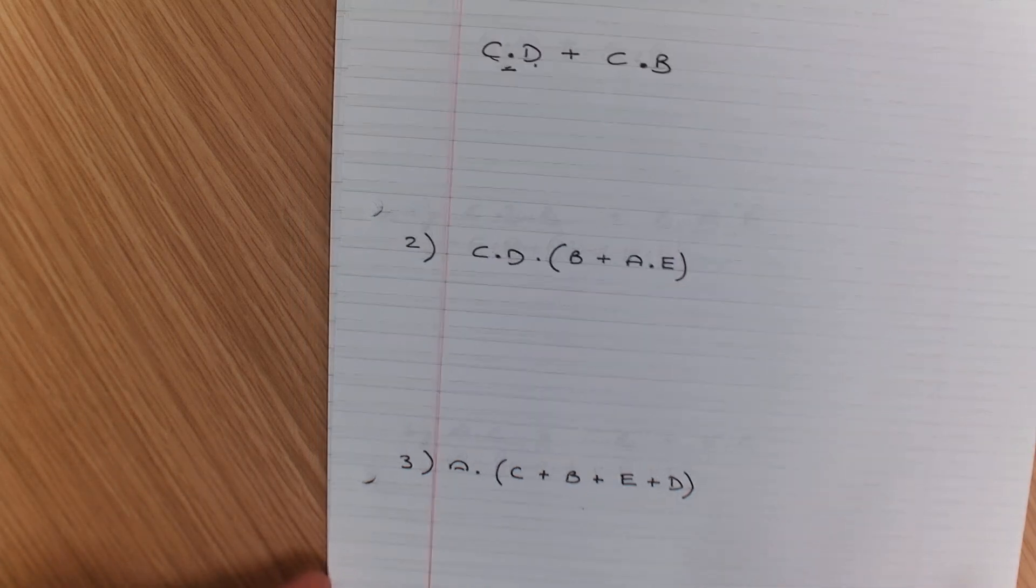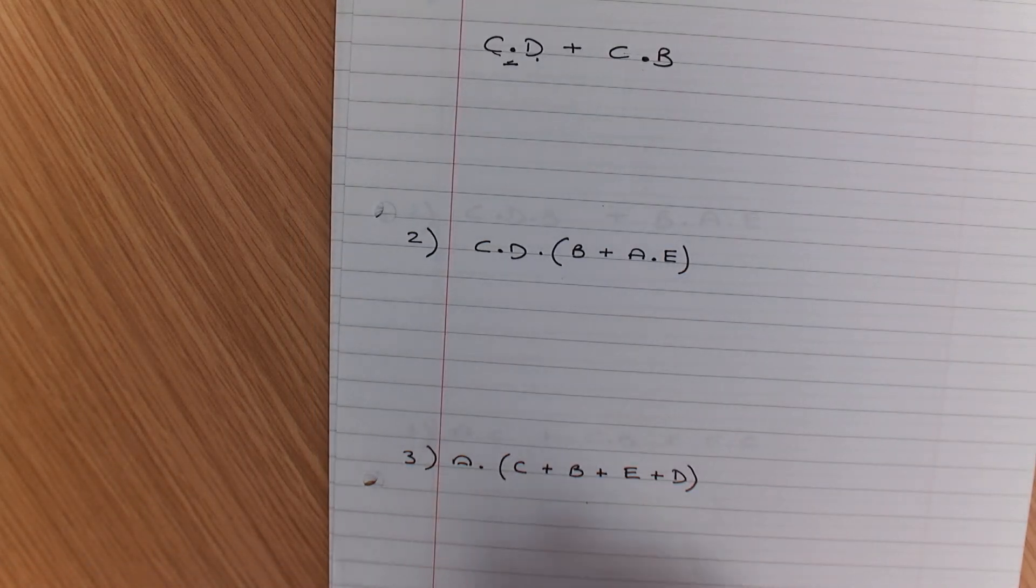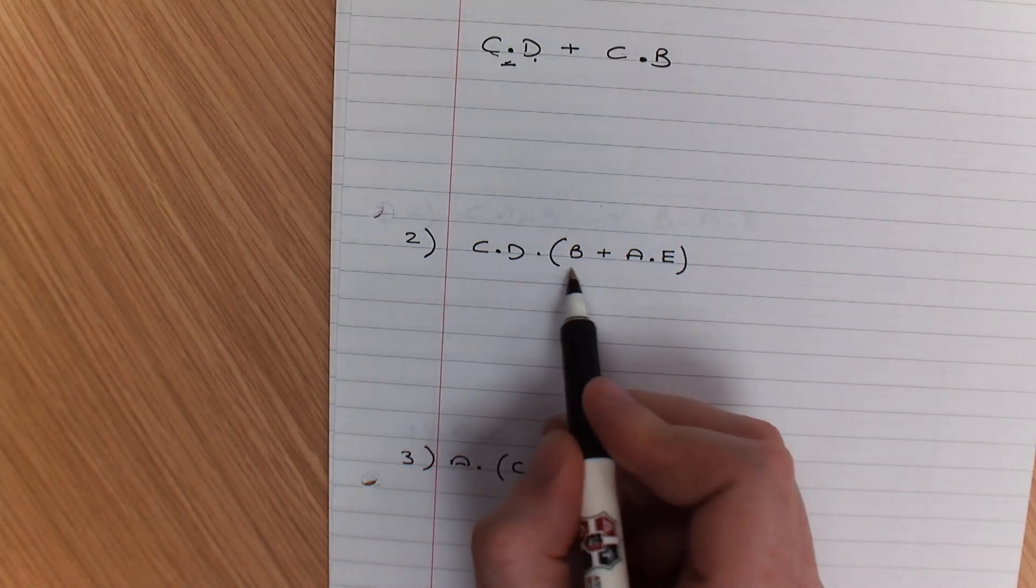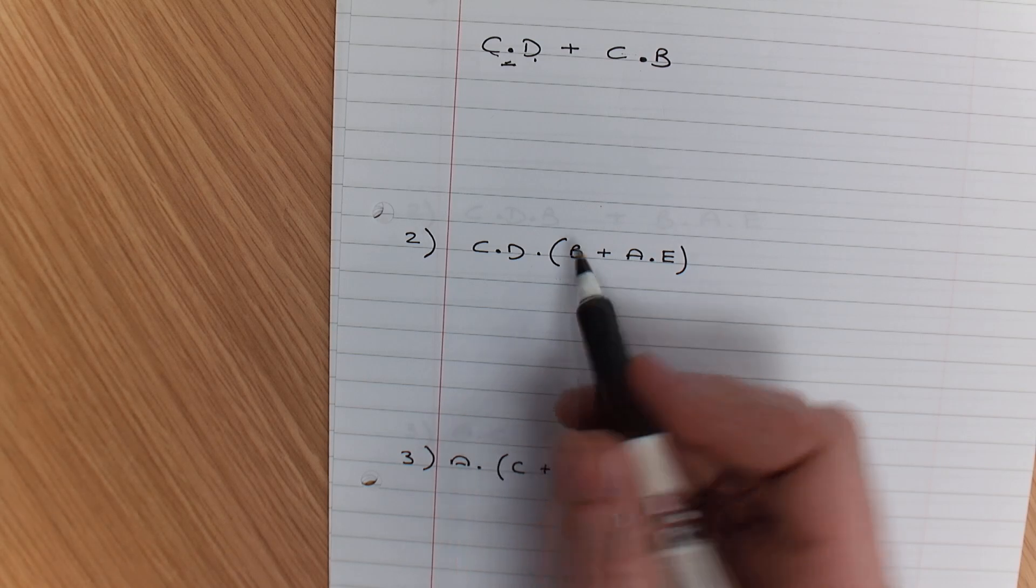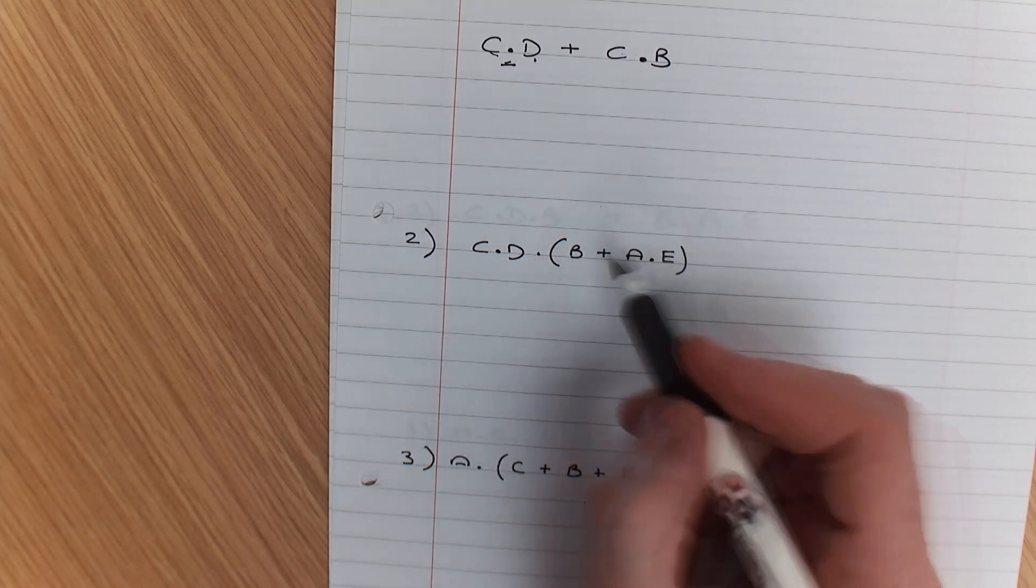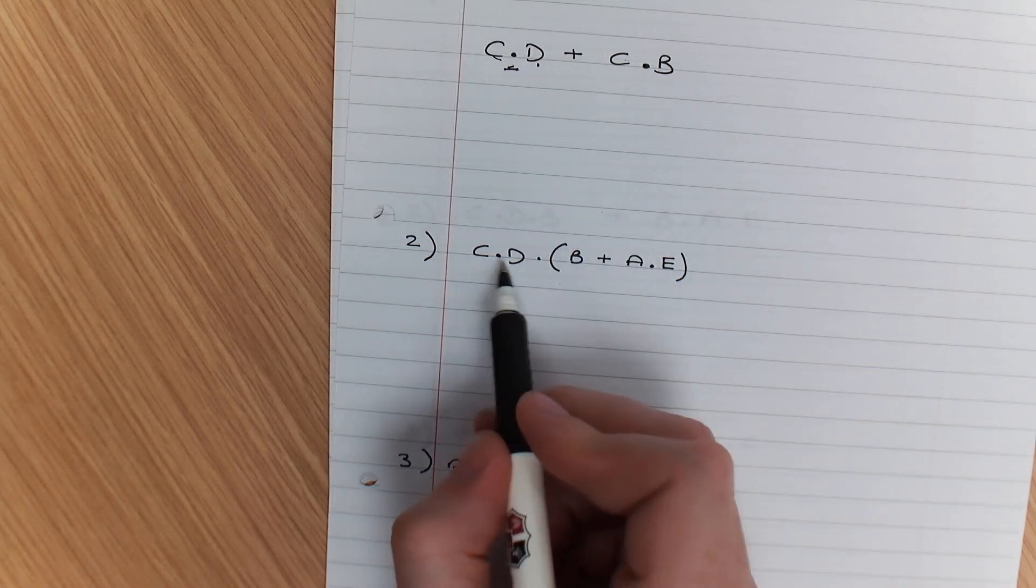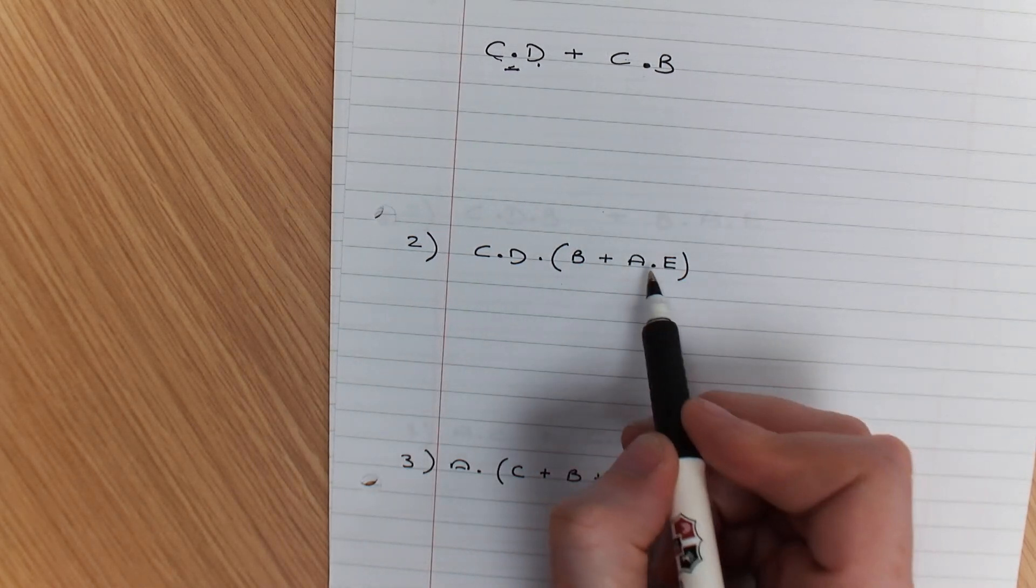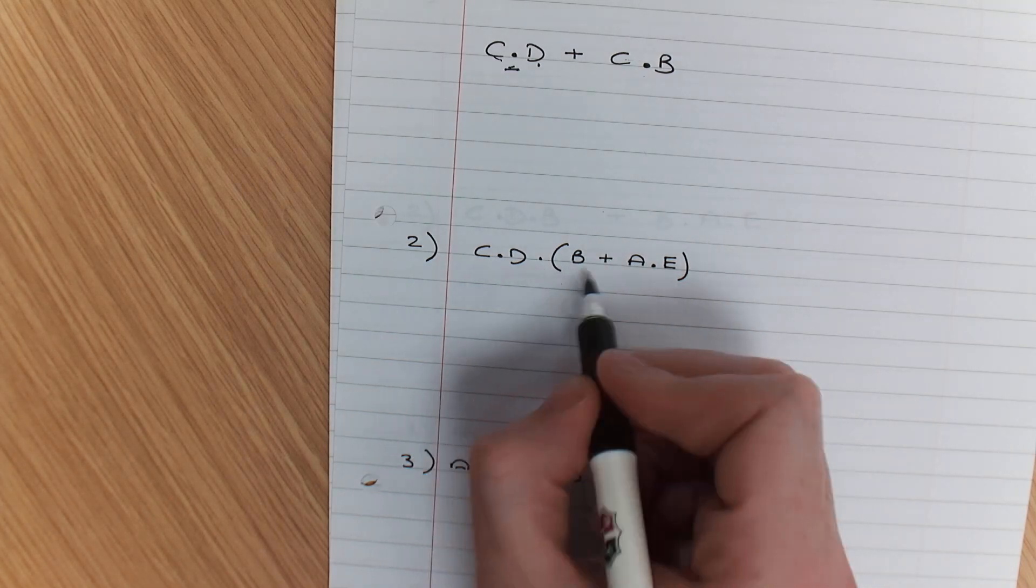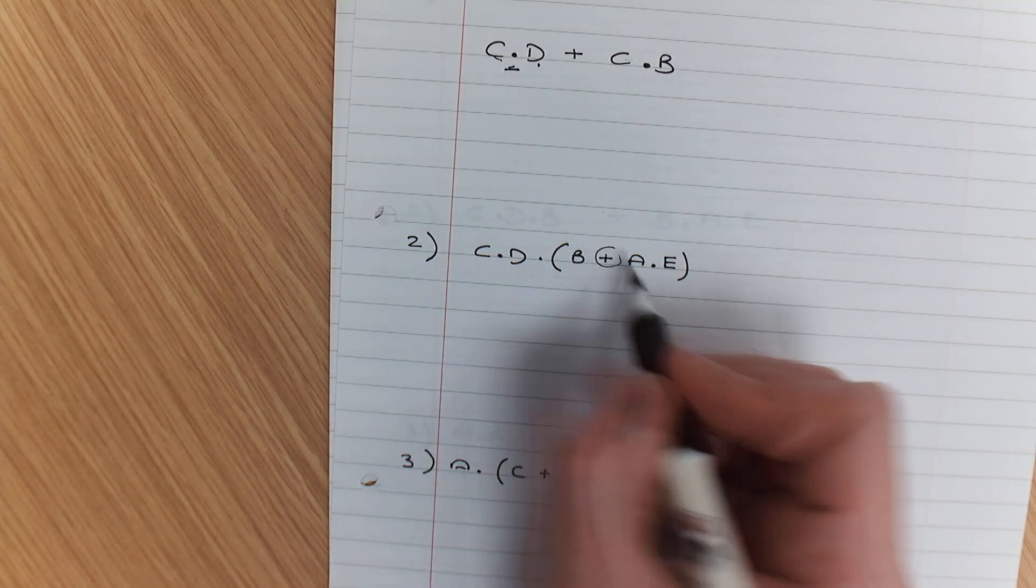Now our next one here, I want you to take a close look at how this works. So we're going to look at the first side of this expression first. Because what we've got is C and D and B. We've also got C and D and A and E, but the difference here, the difference is that there is an OR gate here.